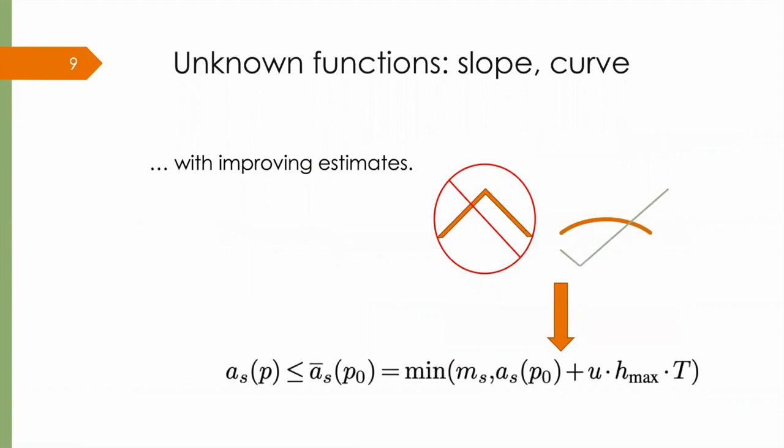We use other information about the track to get even better worst case bounds to substitute in. For example, because slope changes only gradually, use the maximum rate of change of slope to get a bound on its effect. Over here, you can see that I have the naive bound on worst case slope effect, M sub S, but also a more sophisticated bound from knowledge of the rate of change of slope.